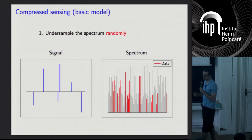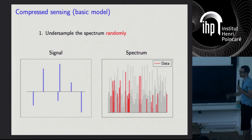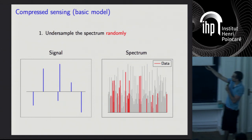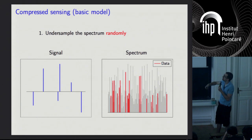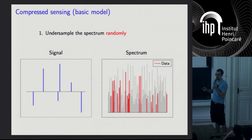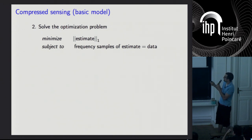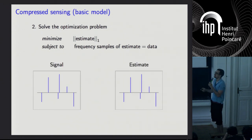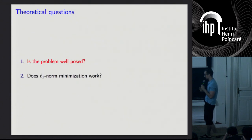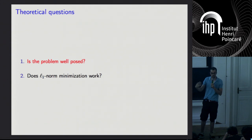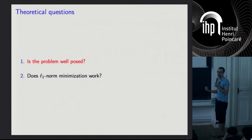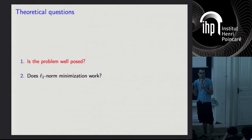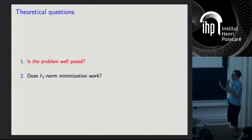Now let's look at a simplified theoretical model of compressed sensing: we have a sparse signal, and instead of having its whole spectrum, we just have some random samples from the spectrum. What we want to do is recover the signal from these random samples. We minimize the L1 norm subject to data constraints, and it works. We can now ask two questions. First: is the problem well posed even with sparsity assumptions — could there be two sparse signals that give us the same data? Second: when can we guarantee that L1 norm minimization will actually work?